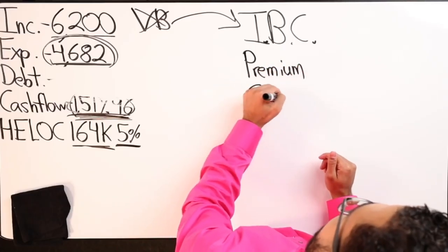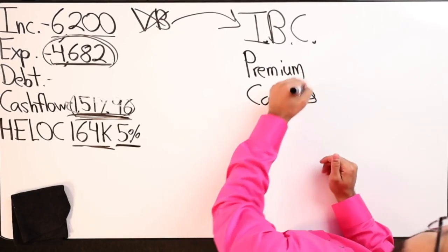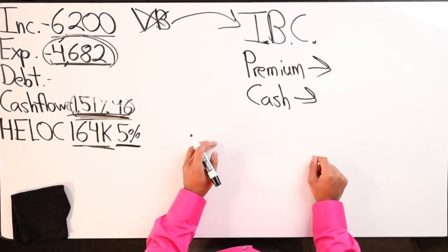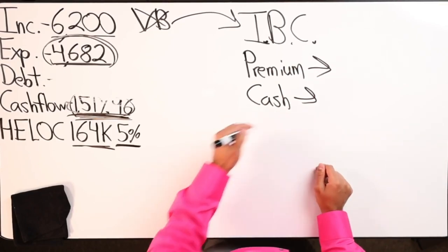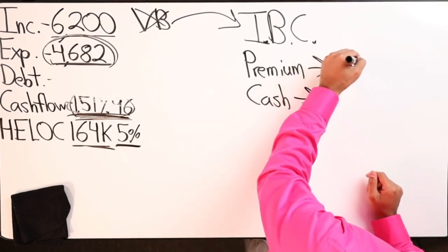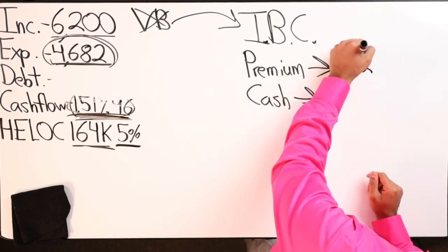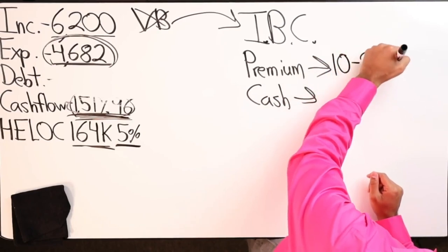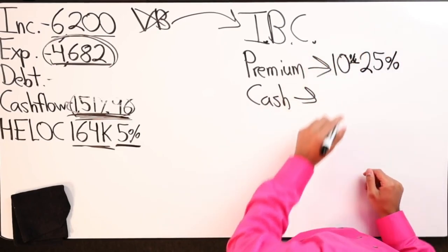If you're talking to an IBC agent, majority of the time they're going to show you a whole life policy. Typically you want to go with the four major mutual life insurance companies. You want to look at how much money is going towards premium and how much is going towards cash.